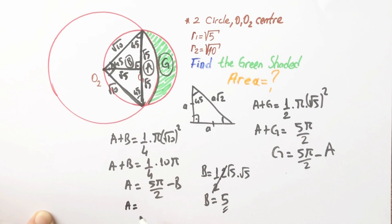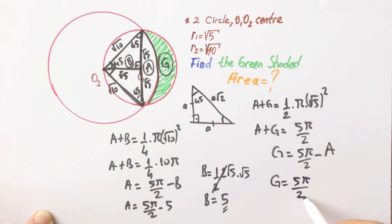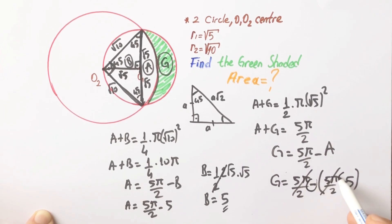Therefore, A equals 5π/2 minus 5. Finally, G equals 5π/2 minus (5π/2 minus 5). These cancel out, so G equals 5 square units.